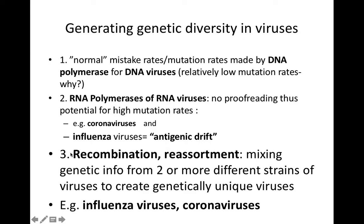Some viruses, not all, have a third way to generate diversity, and that's through the recombination and reassortment of genetic information from two or more different strains of a virus — say, two strains of influenza A or two strains of coronavirus. We'll use influenza viruses and coronaviruses as our poster viruses for genetic recombination and reassortment.